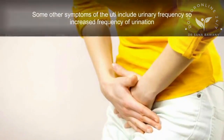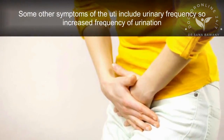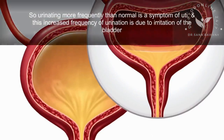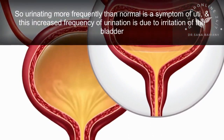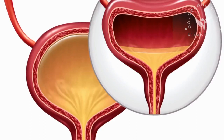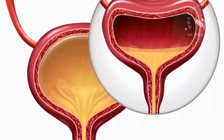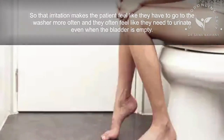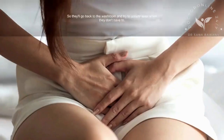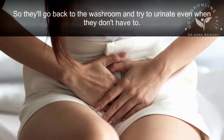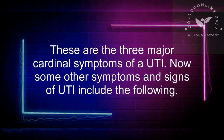Other symptoms of UTI include urinary frequency — increased frequency of urination. This increased frequency is also due to irritation of the bladder, which makes the patient feel like they have to go more often. They often feel like they need to urinate even when the bladder is empty. These are the three major cardinal symptoms of a UTI: dysuria, urgency, and frequency.